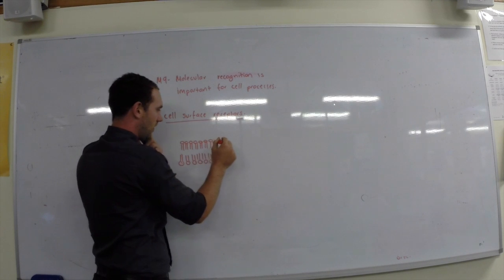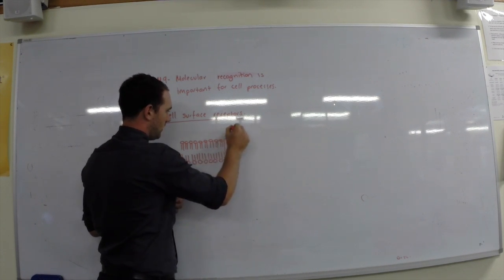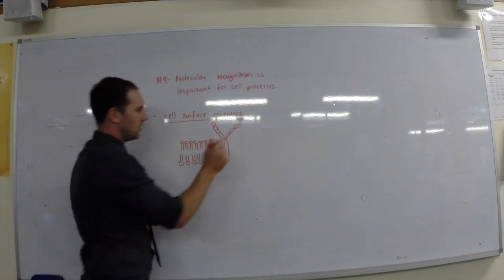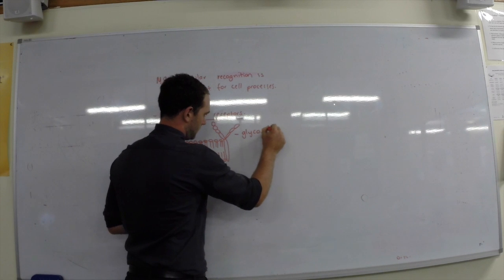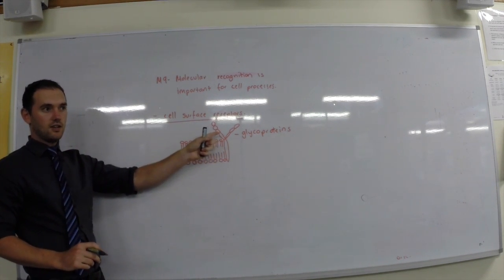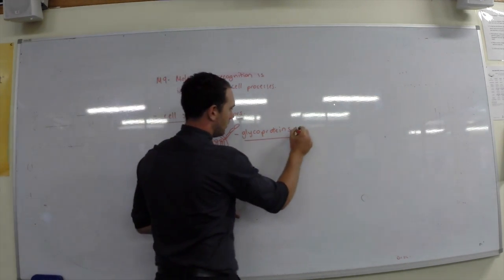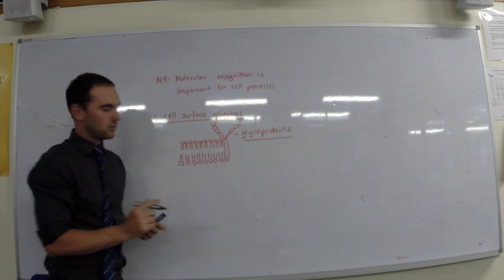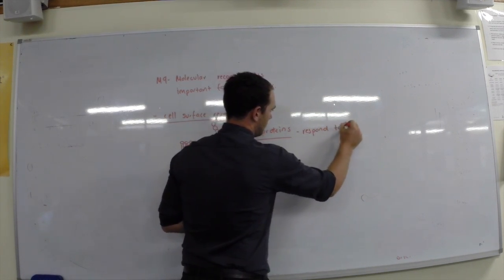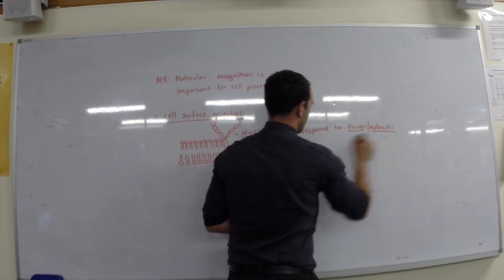The way that we do that is by having proteins embedded in the membrane. Some have these saccharide molecules, so sugar molecules attached. We call these glycoproteins. On top of the protein molecules, they have these oligosaccharides, which just means eight to nine sugar molecules attached. And they're going to respond to things touching the surface.